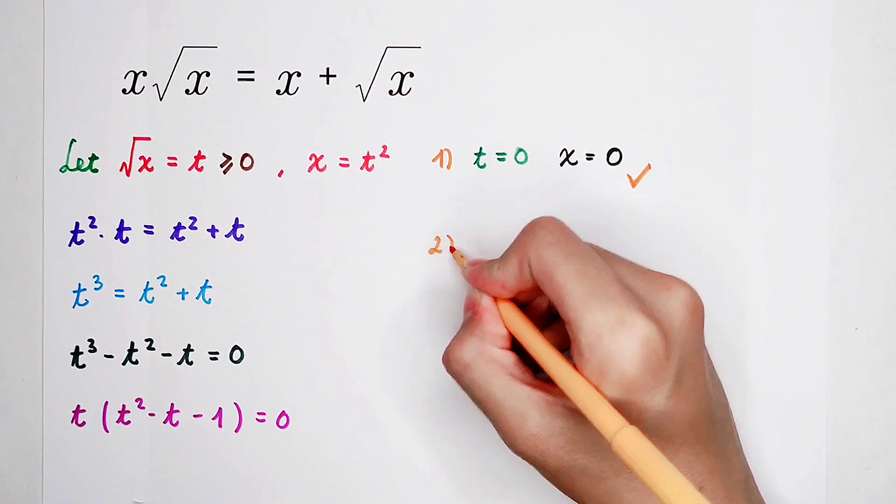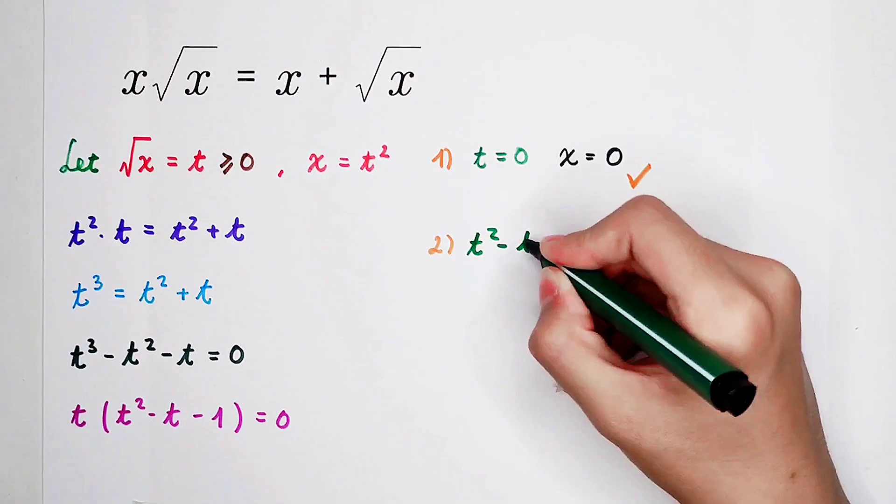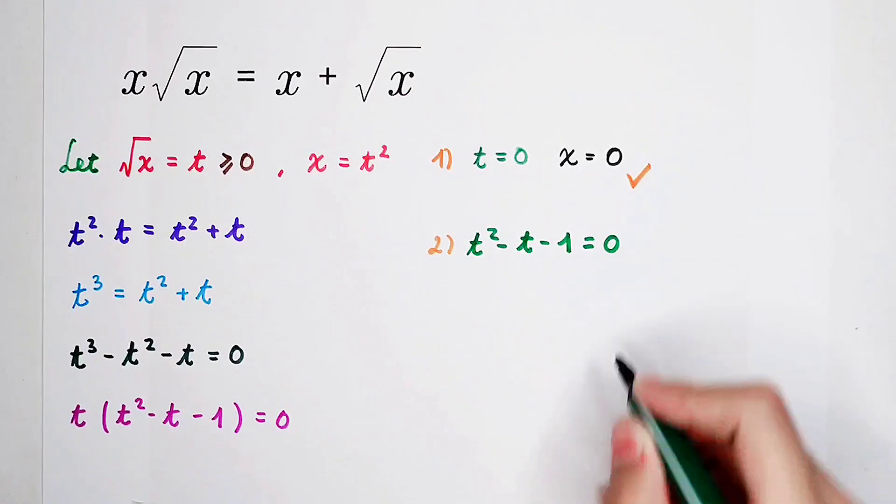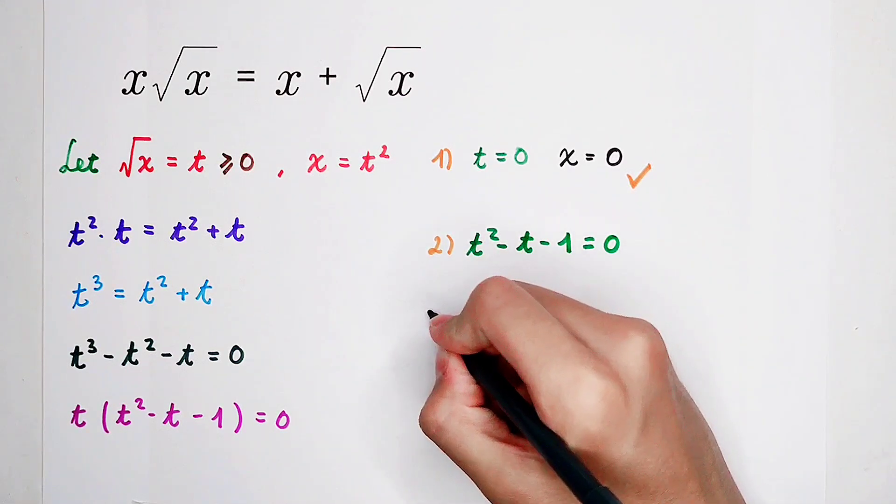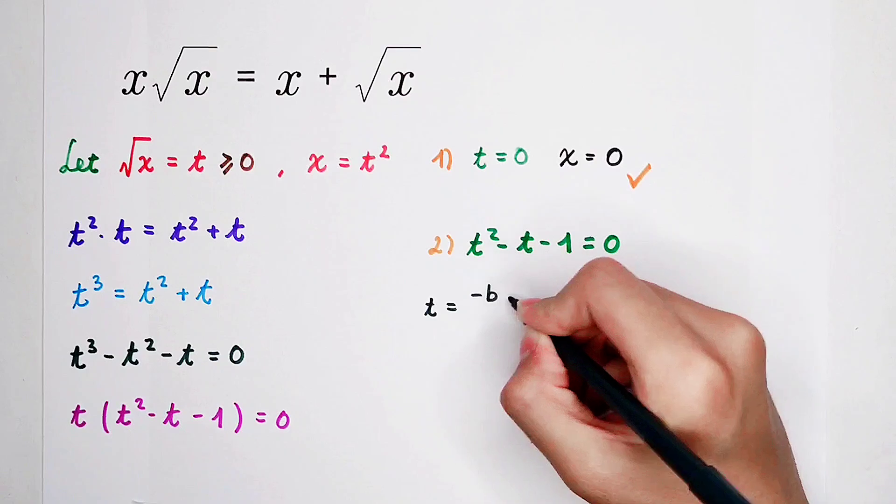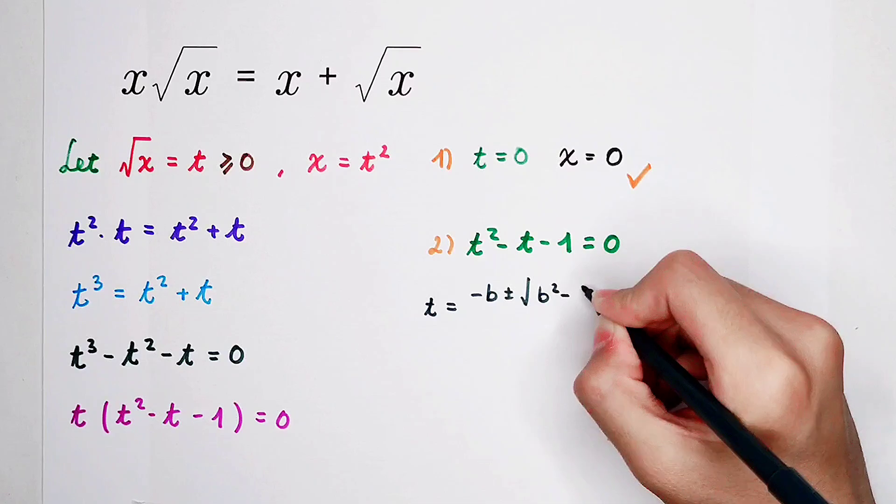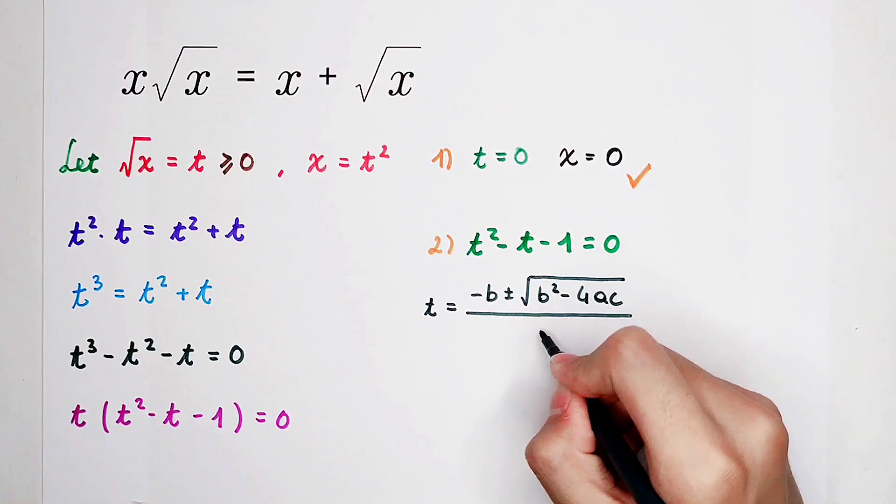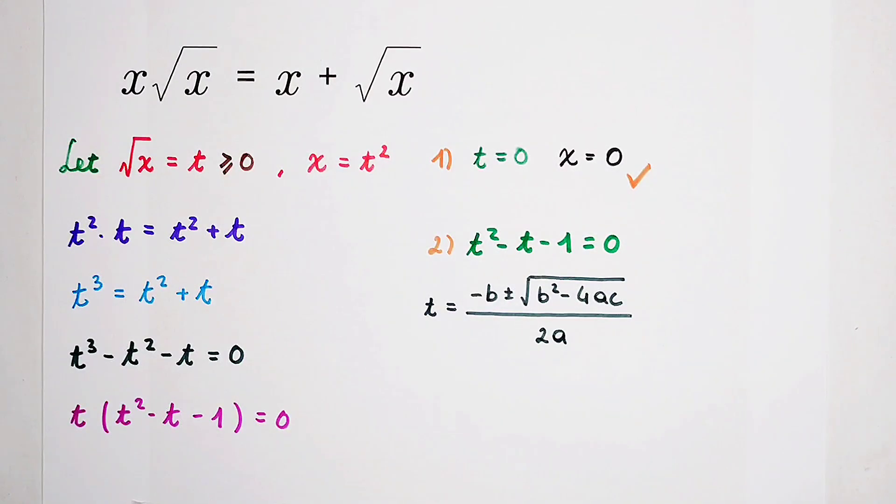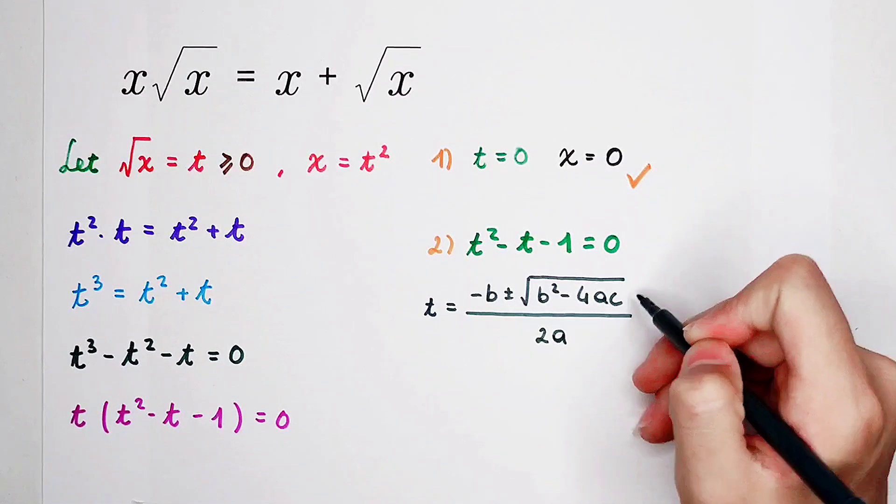For our second case, of course, if t squared minus t minus one is equal to zero. Then, by using the quadratic formula, we can get that t is equal to minus b plus or minus square root of b squared minus 4ac all over 2a. Quadratic formula. Now, please substitute b is equal to negative 1, a is 1, and c is negative 1. Enter this formula.